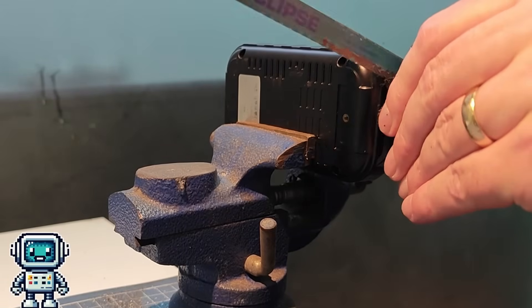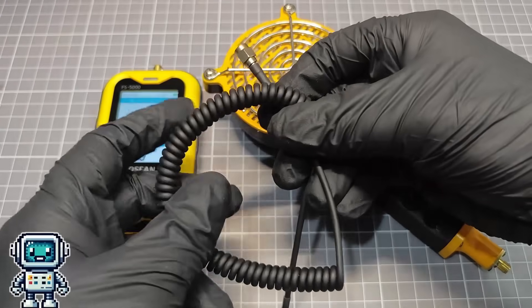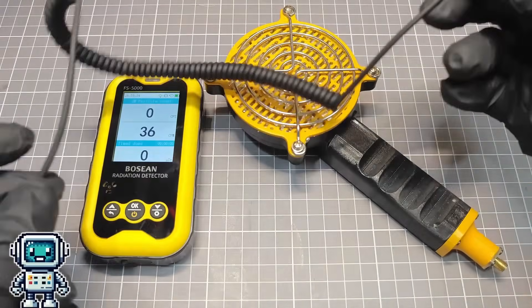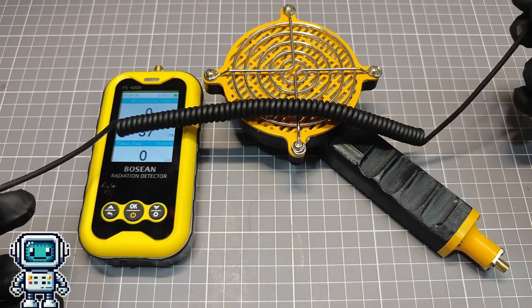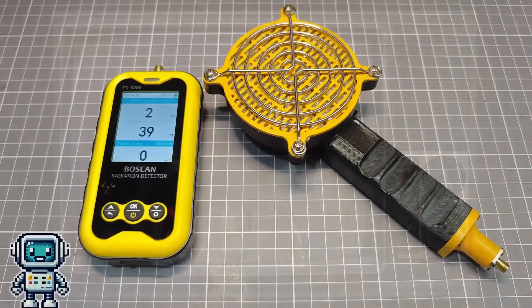And once we have done that, we are going to test the crap out of this thing, and figure out if this vintage radiation sensor still outperforms more modern tubes. Right, let's crack on with it.